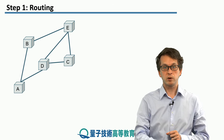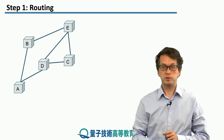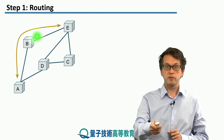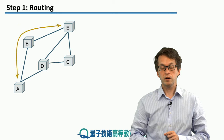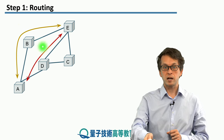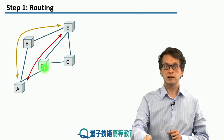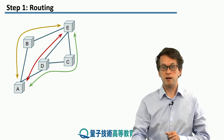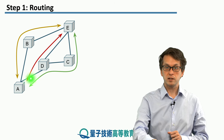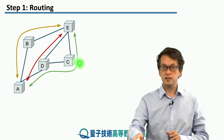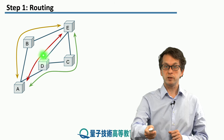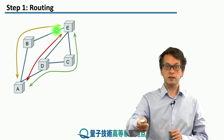Let's consider a simpler network. We want to communicate from A to E. There are three different possible paths. The network can establish an entangled pair between A and E by performing entanglement swapping at B, or via entanglement swapping at D using link-level entanglement between DE and AD, or via node C performing entanglement swapping at C and D — first establishing link-level entanglement between AD, DC, and CE — in order to establish end-to-end entanglement between A and E.